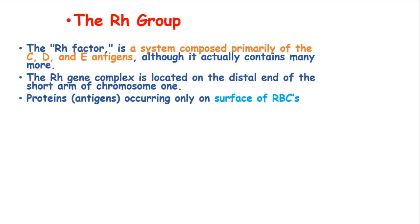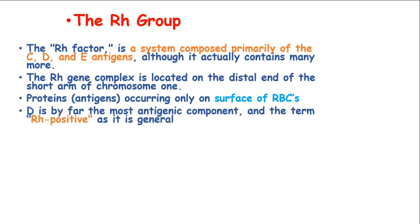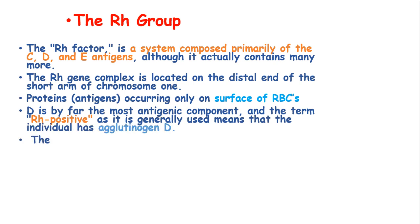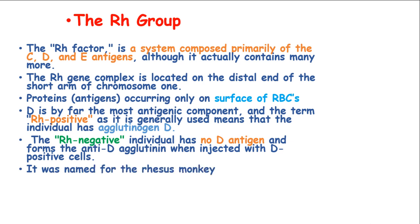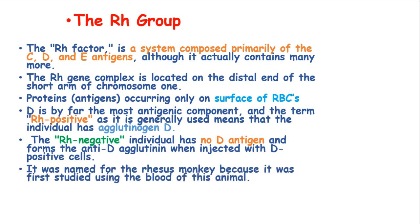Antigen D is by far the most antigenic component, and the term RH positive in its general use means that the individual has agglutinogen D. The RH negative individual has no antigen D and forms the anti-D agglutinin when injected with D positive cells. It was named after the Rhesus monkey because it was the first study using this blood.